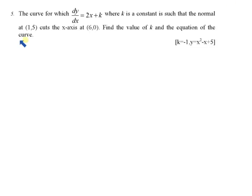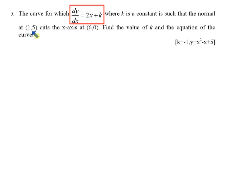We move on to example 5. The curve for which dy/dx equals 2x plus k, where k is a constant, is such that the normal at (1, 5) cuts the x-axis at (6, 0).